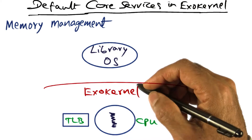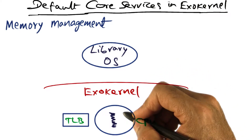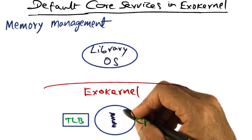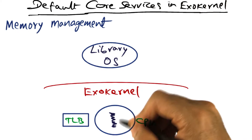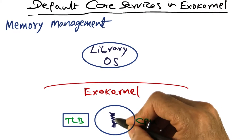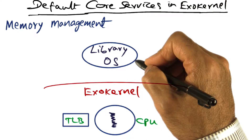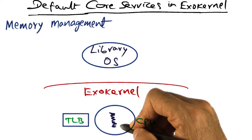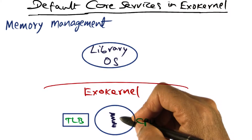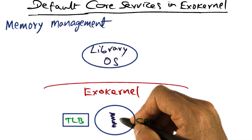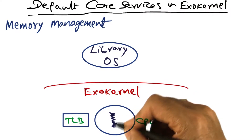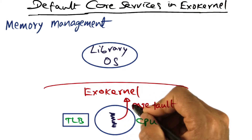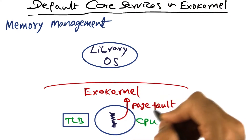Let's look at memory management — specifically, how exokernel will handle a page fault incurred by a library operating system. In this picture, here is an application thread running, which belongs to a specific library operating system. So long as this application thread is doing normal memory accesses where all its virtual addresses have been mapped to physical page frames, the thread is executing at hardware speeds on the CPU.